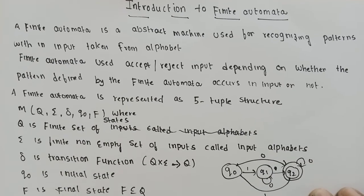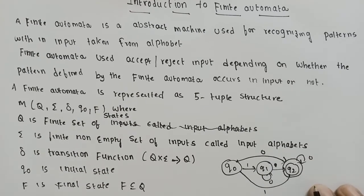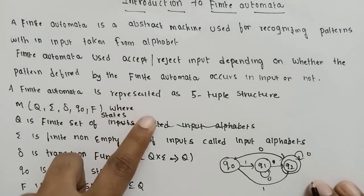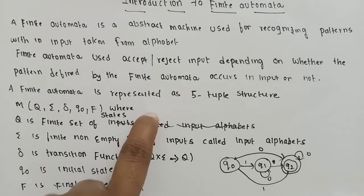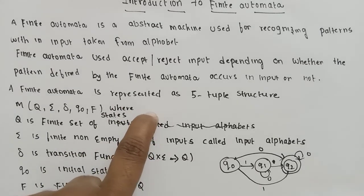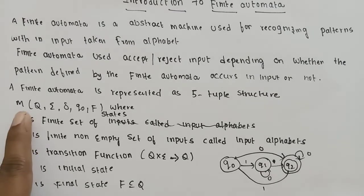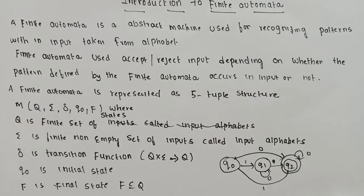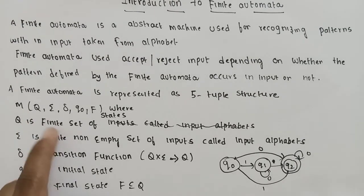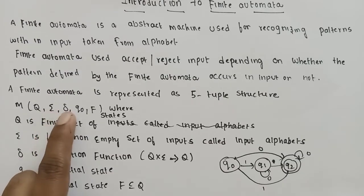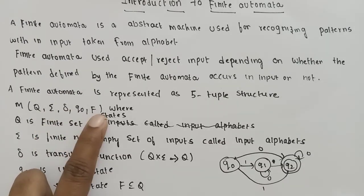The definition should be: A Finite Automata is represented by a 5-tuple structure. The 5-tuple structure is defined as Q, sigma, delta, Q0, and F.